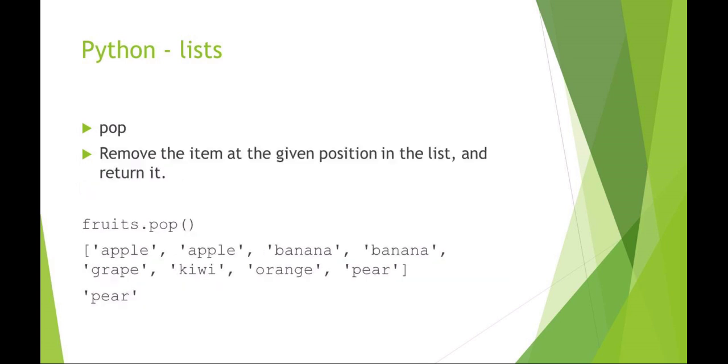We've got pop which is going to remove and return it. So if I say pop, it's going to remove the last item on the list. Fruits.pop() is going to push off that last item which is pear and return it.